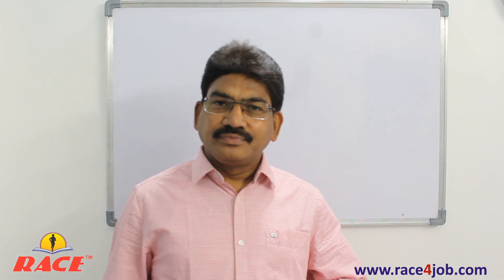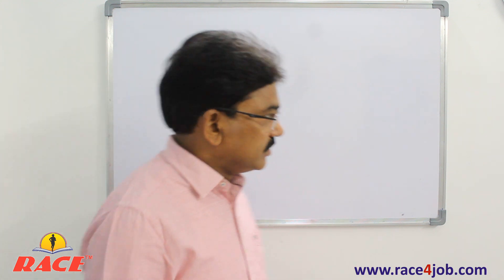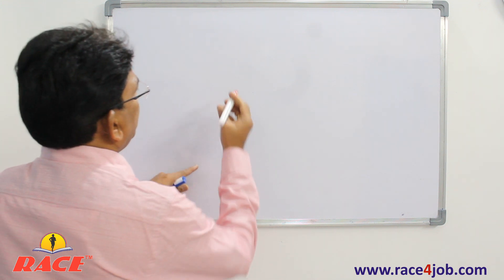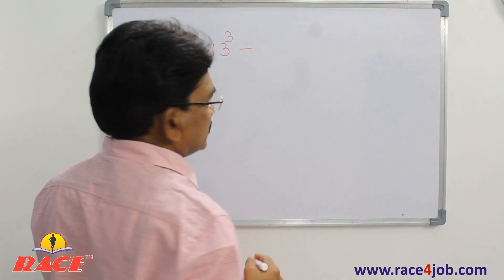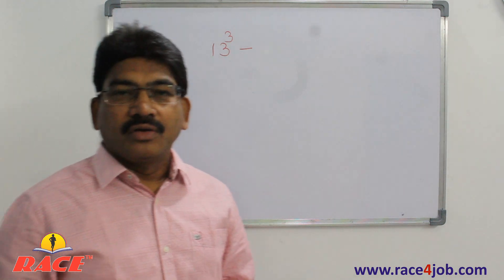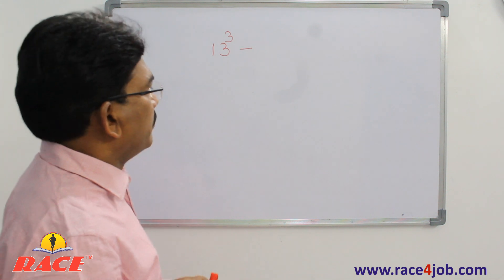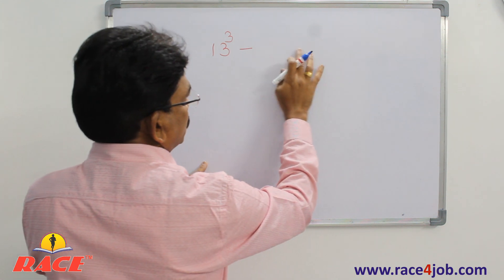Let us see how to find out the cube of a two-digit number. In just seconds we can find out the cube of any two-digit number. Let us take some examples. Say, 13 cubed. Remember, here there are two digits — first is 1, second is 3. You have to write numbers in four positions totally.